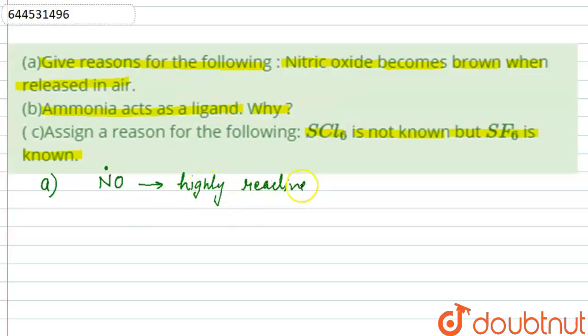Due to this reason, when it is released in air, it reacts with atmospheric oxygen to give us colored nitrogen dioxide. This is the main reason - it is highly reactive due to the unpaired electron. Nitric oxide is colorless but gives a brown color gas when released in air.